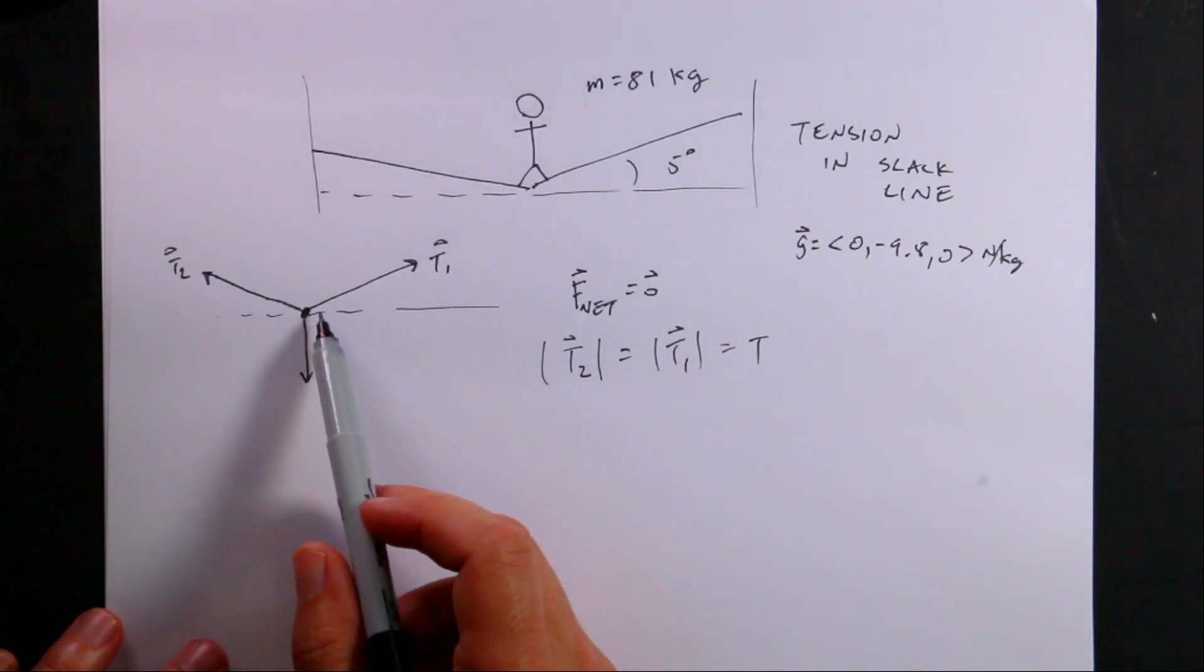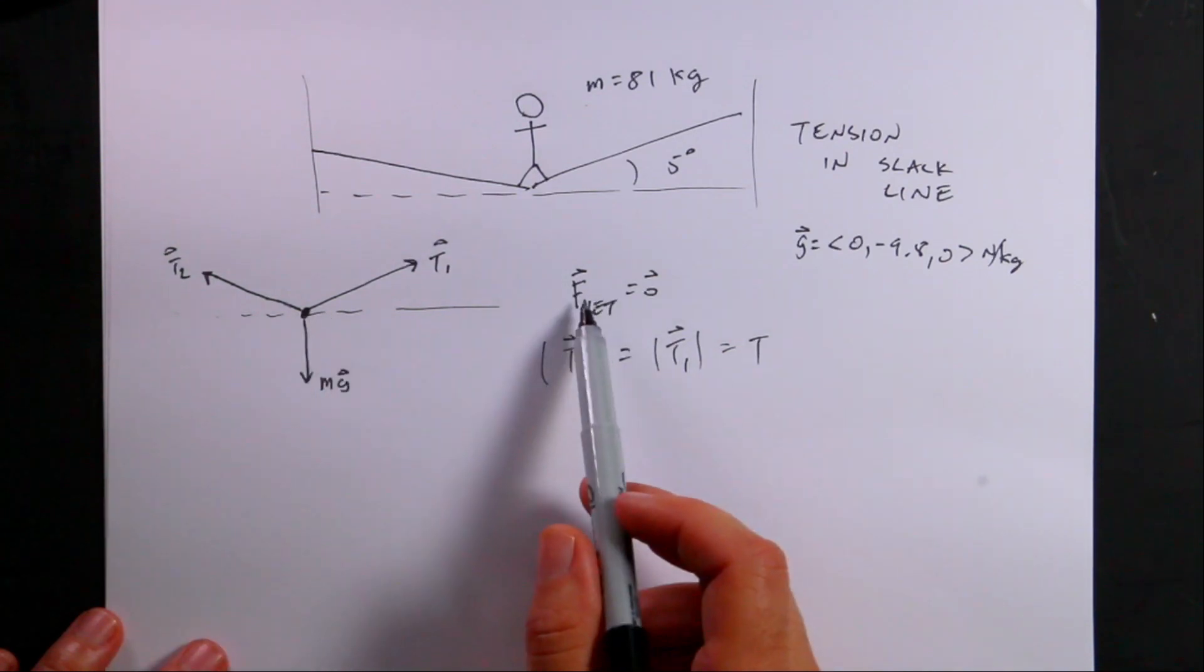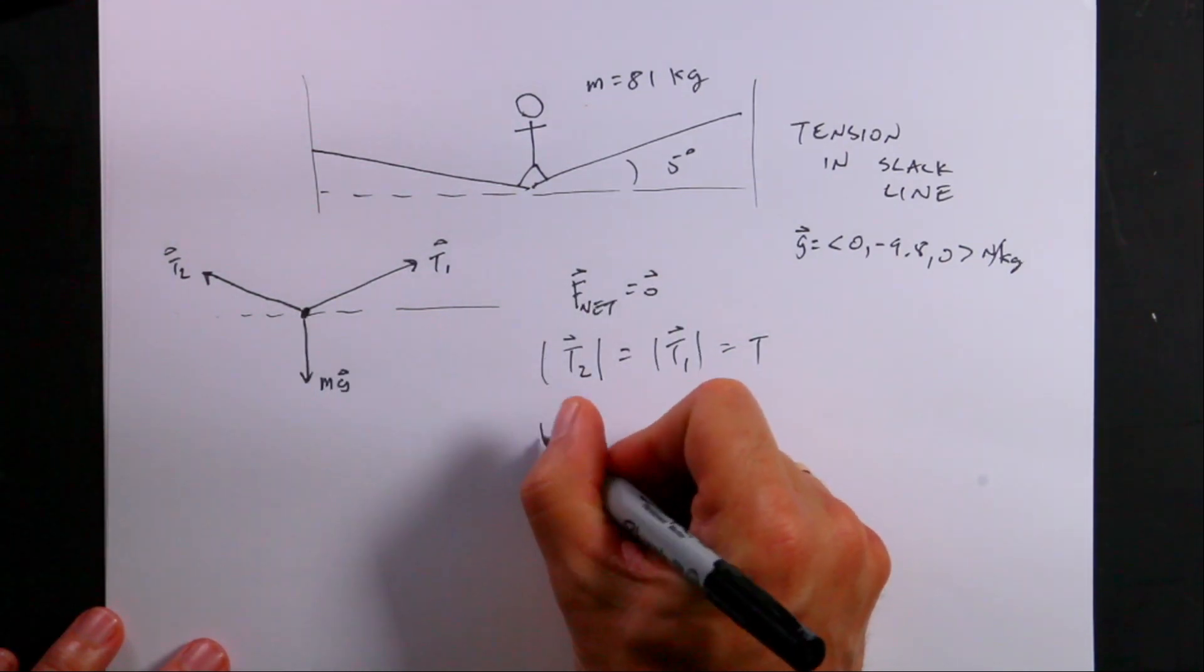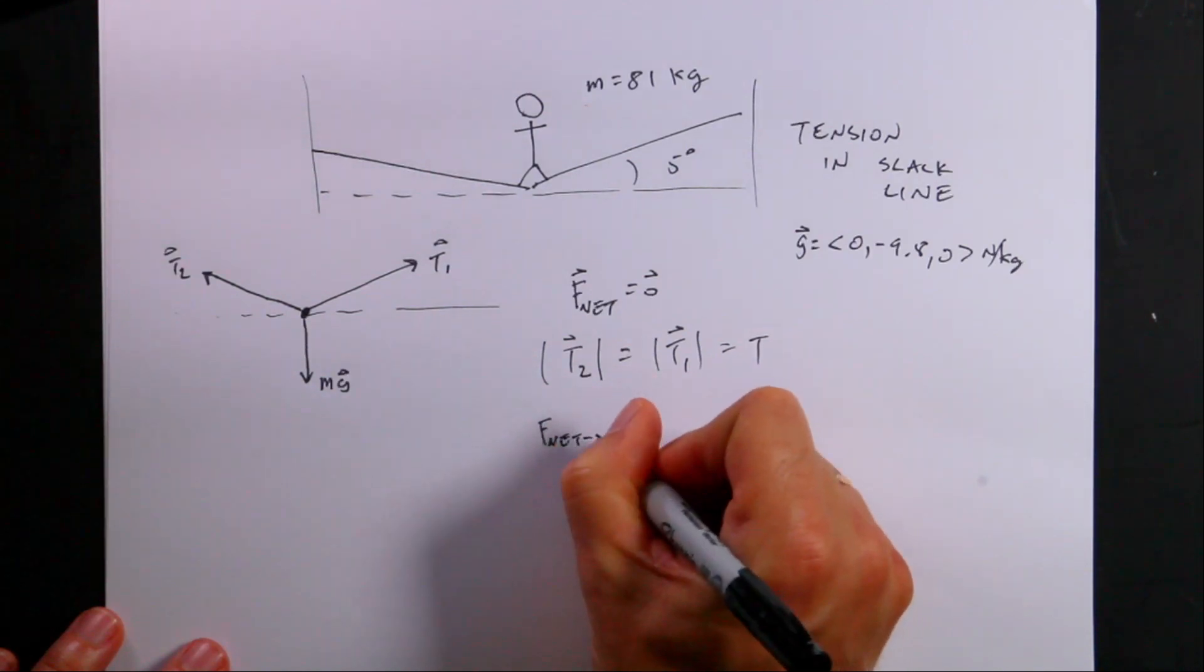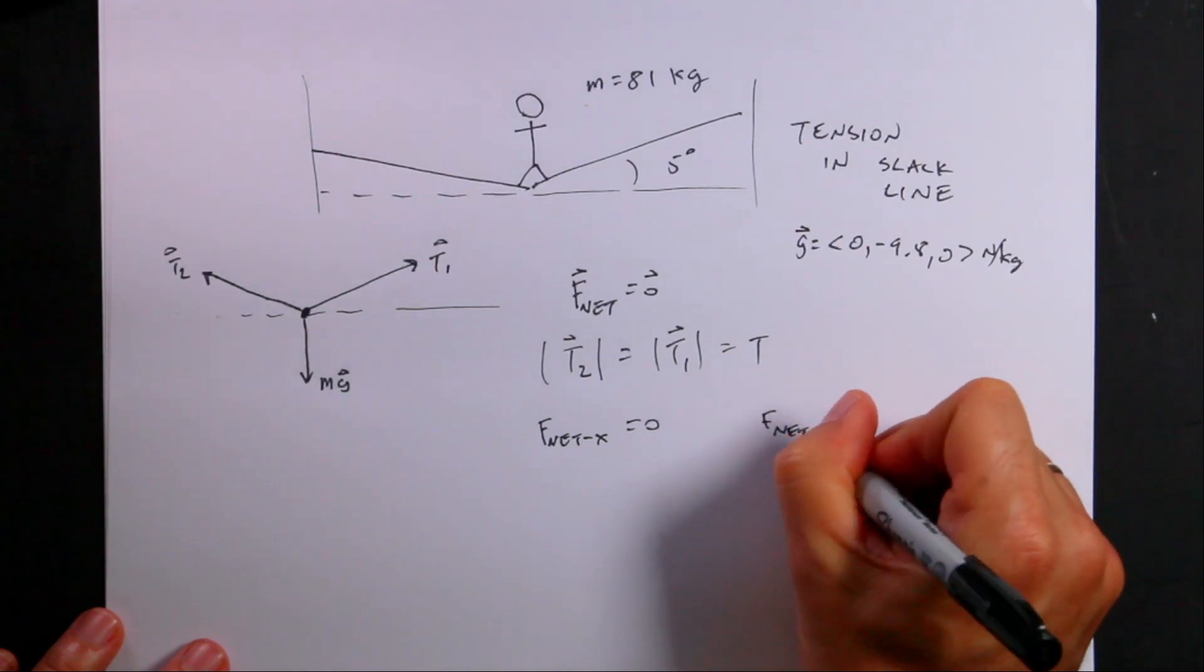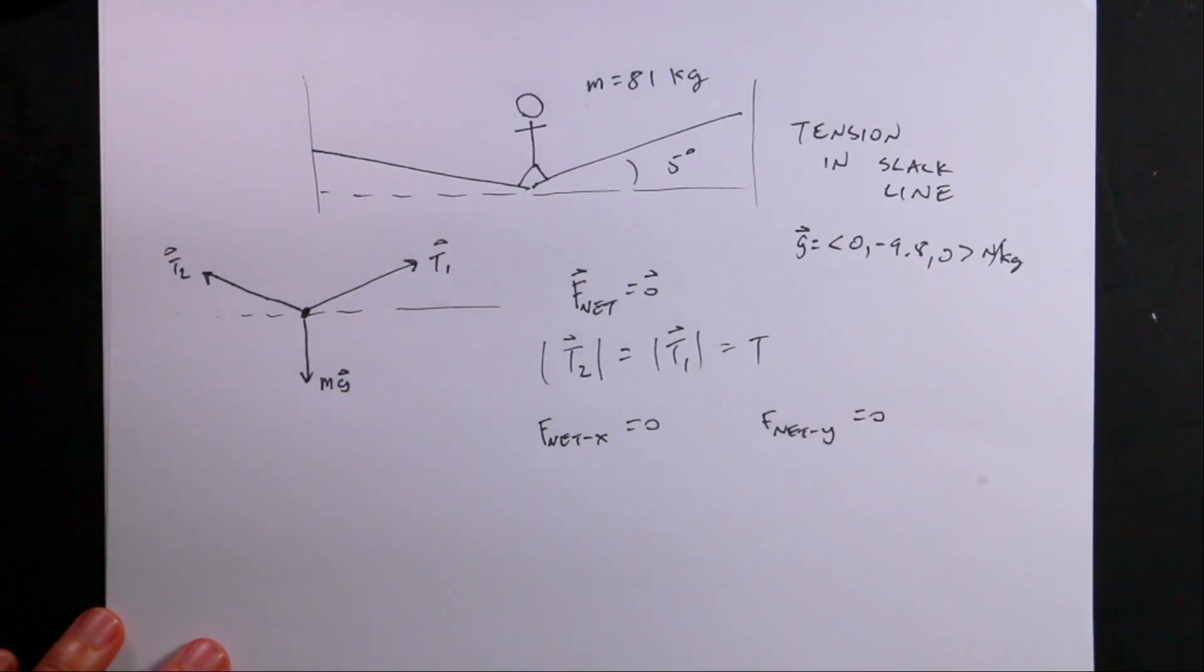Now, if the net force is zero, then I actually can write this as two equations. I can say f net in the x direction is zero as a scalar equation and f net in the y direction as a scalar equation is zero.